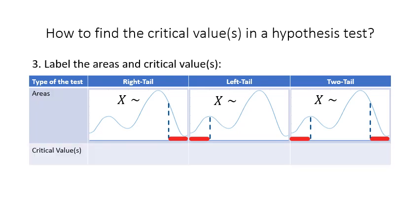Then you label the areas using proper notation. In a right-tail test, the area of the right tail is alpha. In a left-tail test, the area of the left tail is alpha. In a two-tail test, the area of both tails together is alpha, so each tail has area alpha over two. The remaining area under each distribution curve is therefore 1 minus alpha.